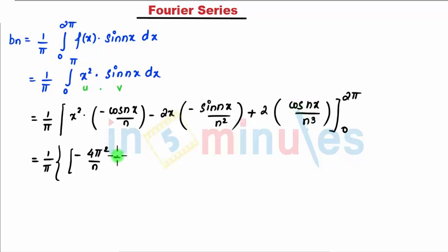gives me 1, so I get plus 2 by n³. When I put lower limit, that becomes 0, here also 0, and here cos 0 is 1, so I get 2 by n³.